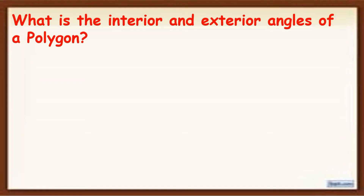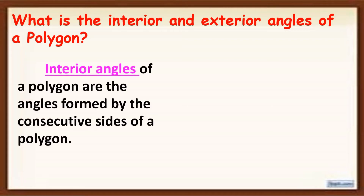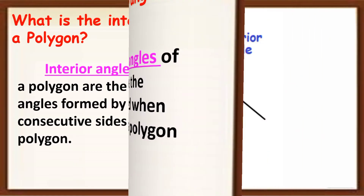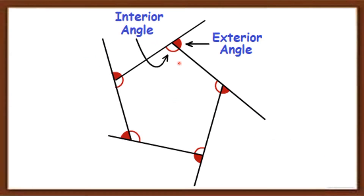When we say interior angles of a polygon, these are the angles formed by the consecutive sides of a polygon. Exterior angles of a polygon are the angles formed when the side of a polygon is extended. For example, we have this figure — these angles are the interior angles and these angles are the exterior angles.